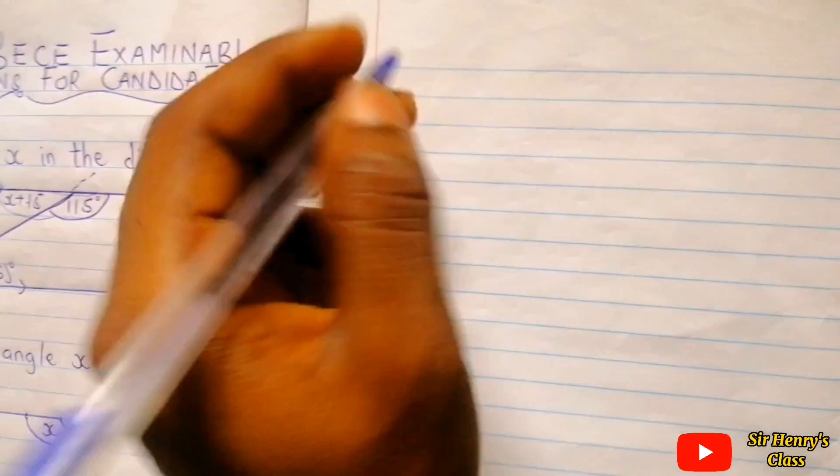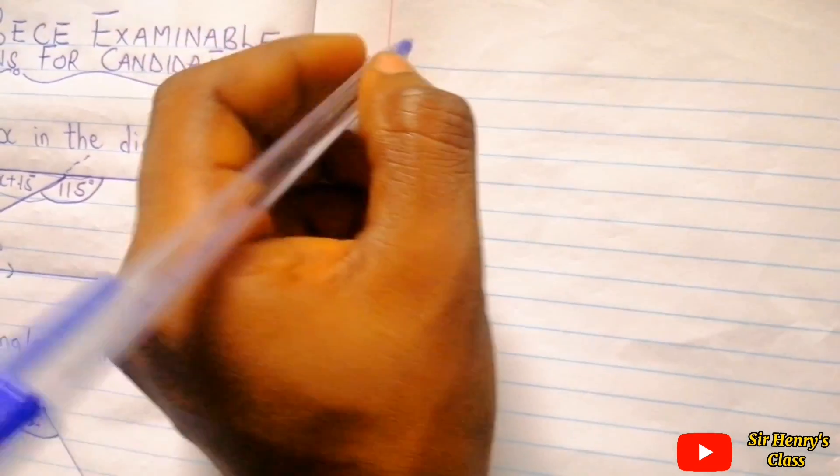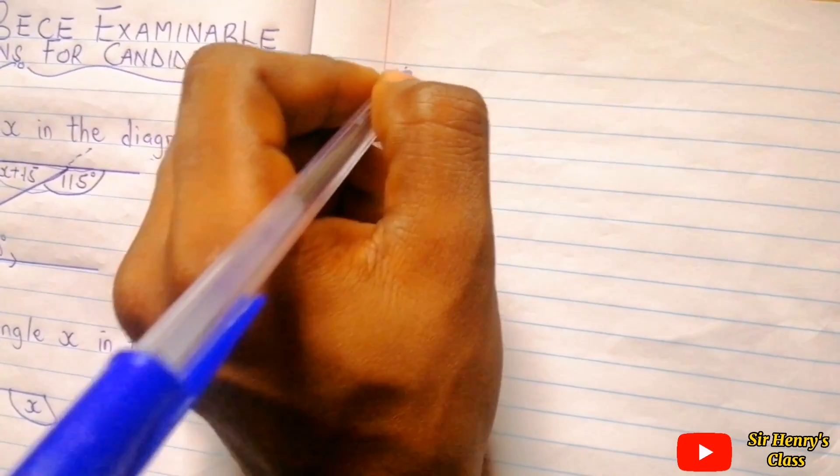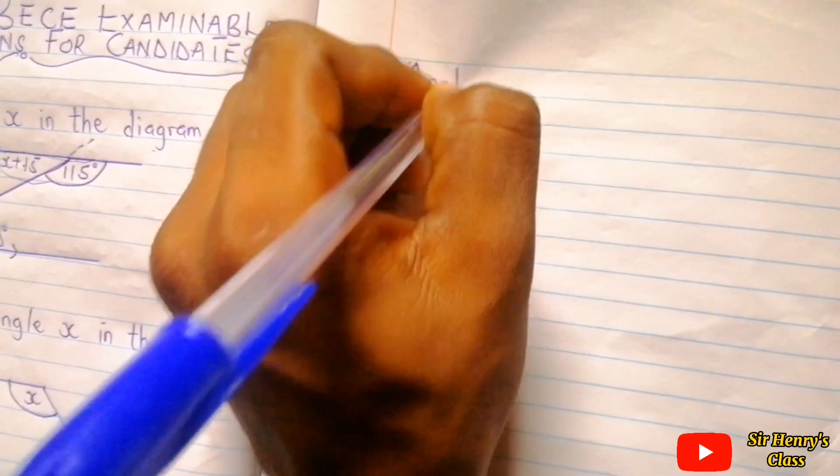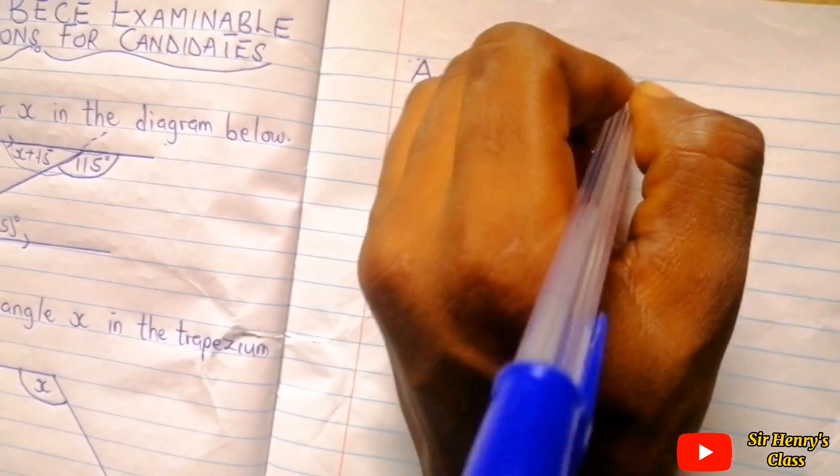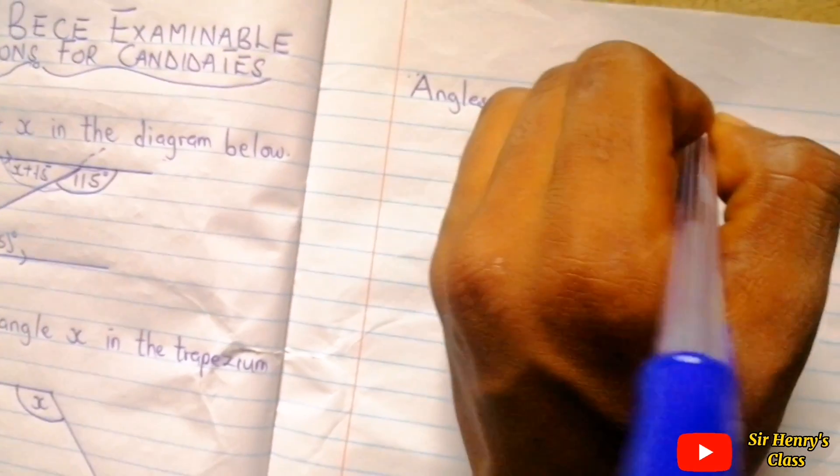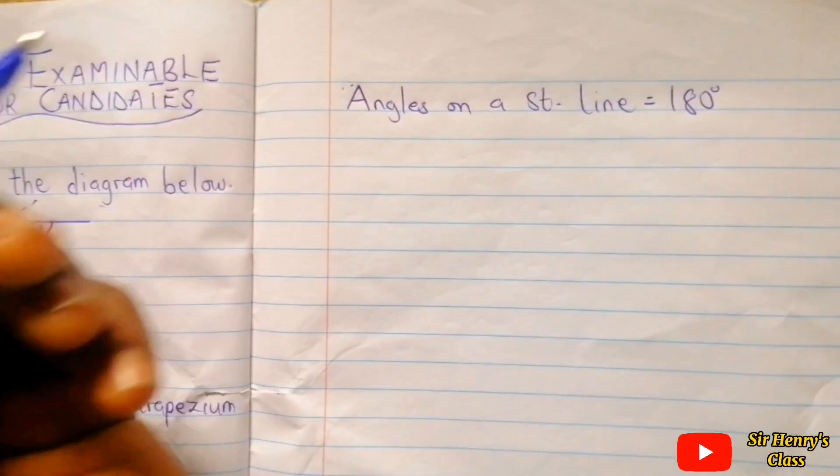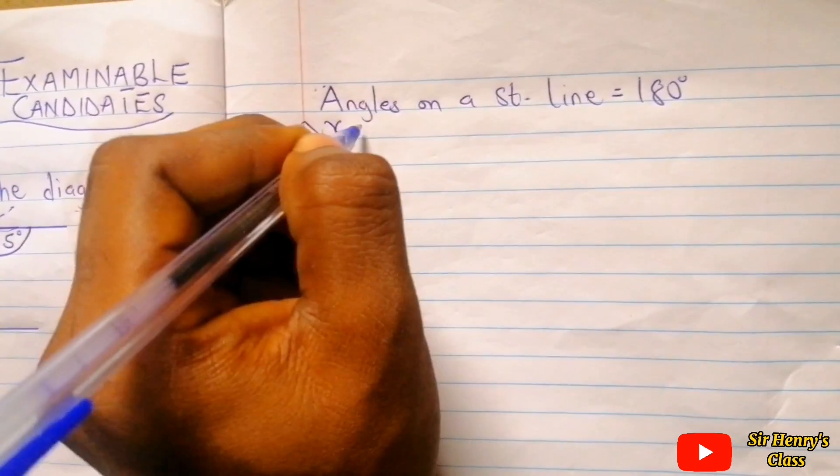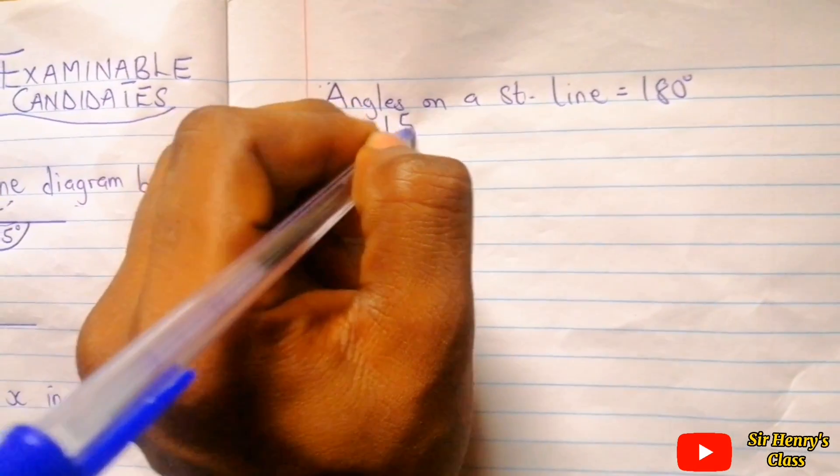So here we would see that angles on a straight line equals 180 degrees. So what are the two angles on the straight line? It is x plus 15 degrees and 115 degrees add up to give us 180.